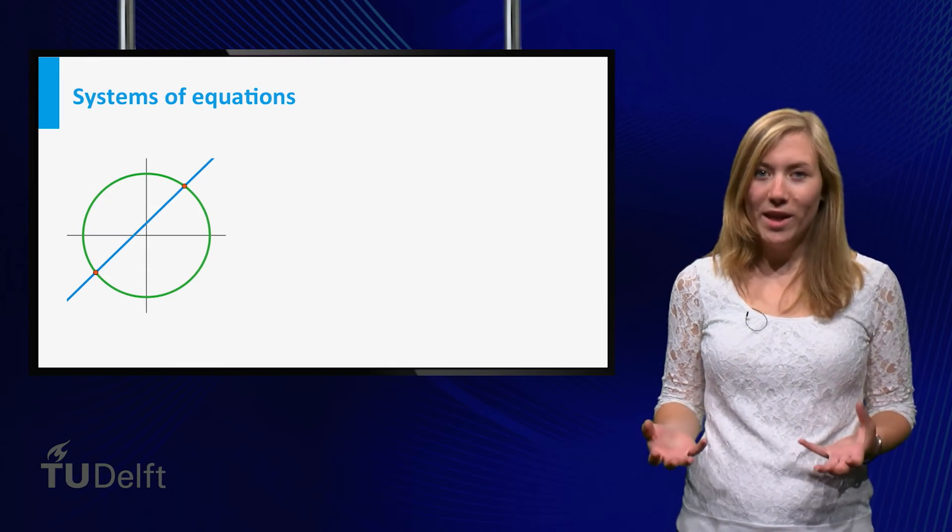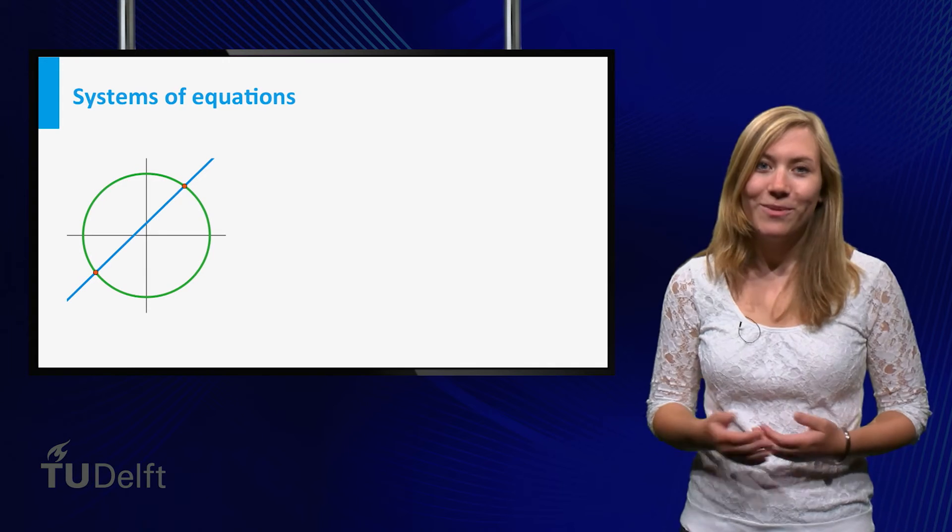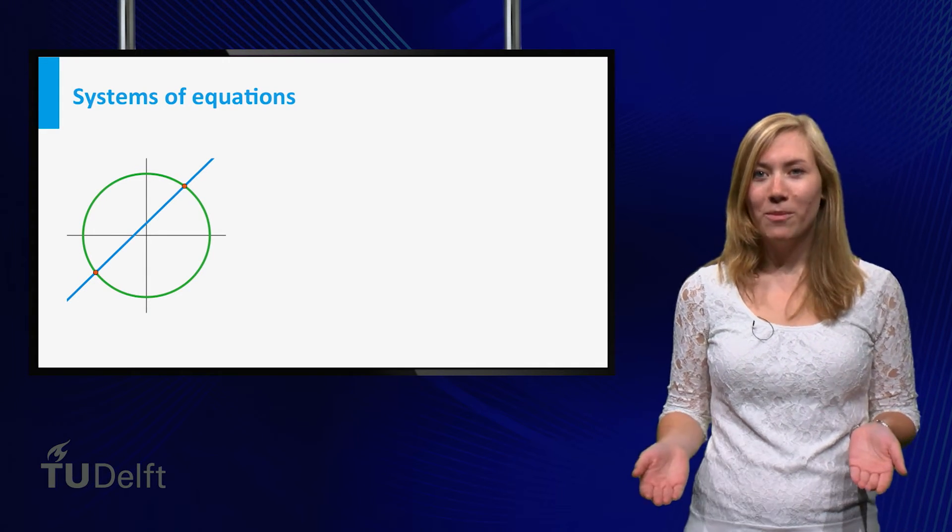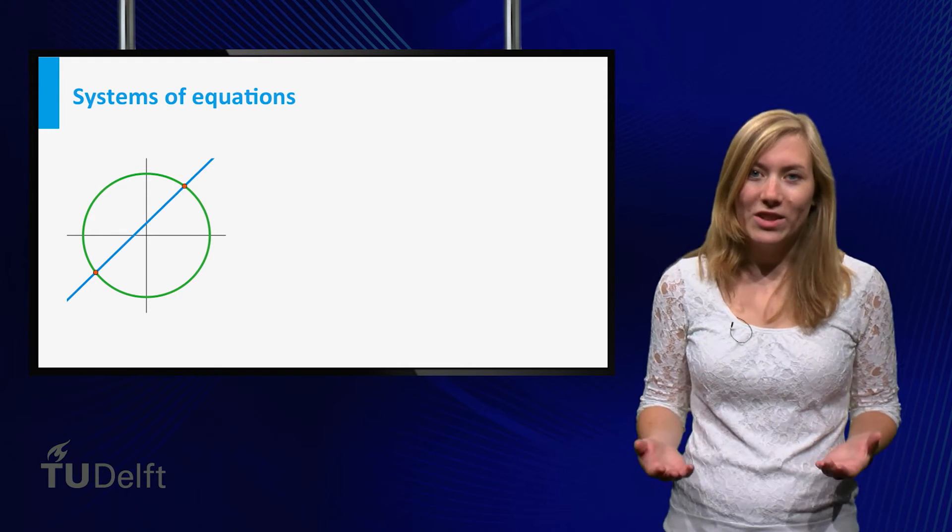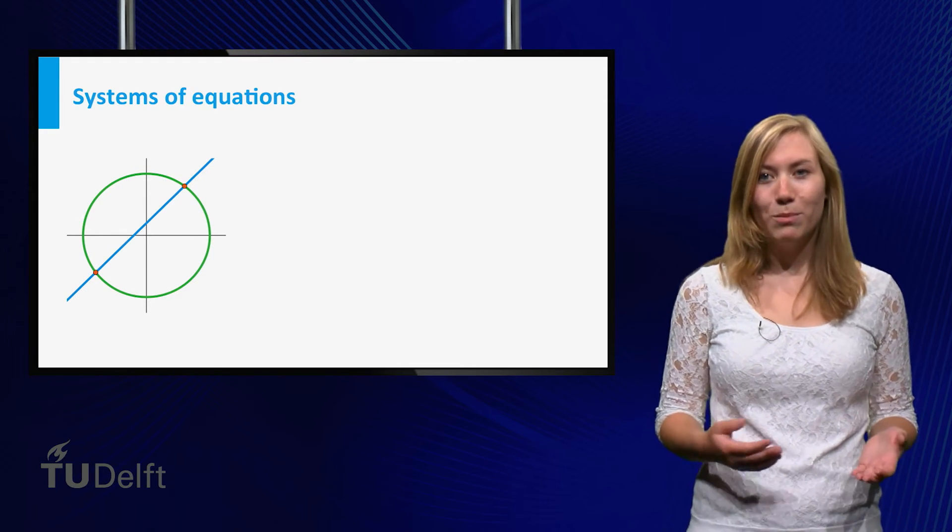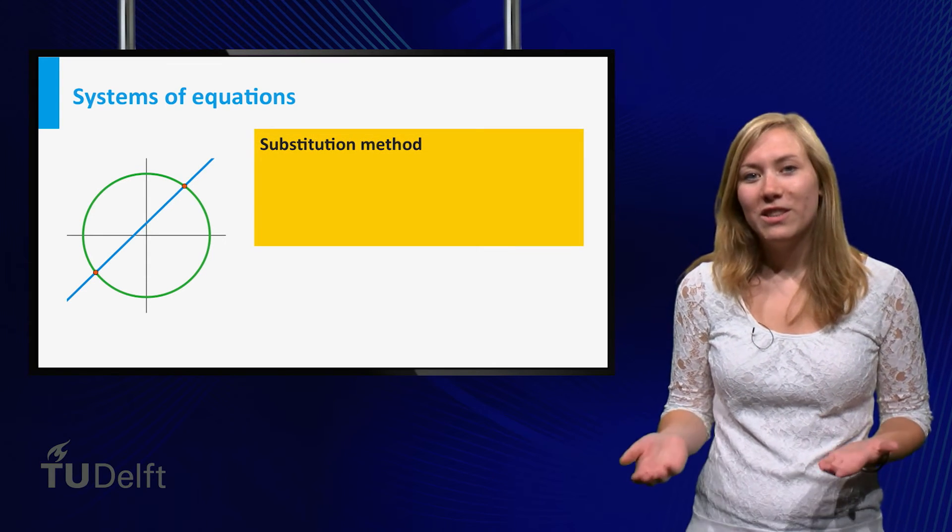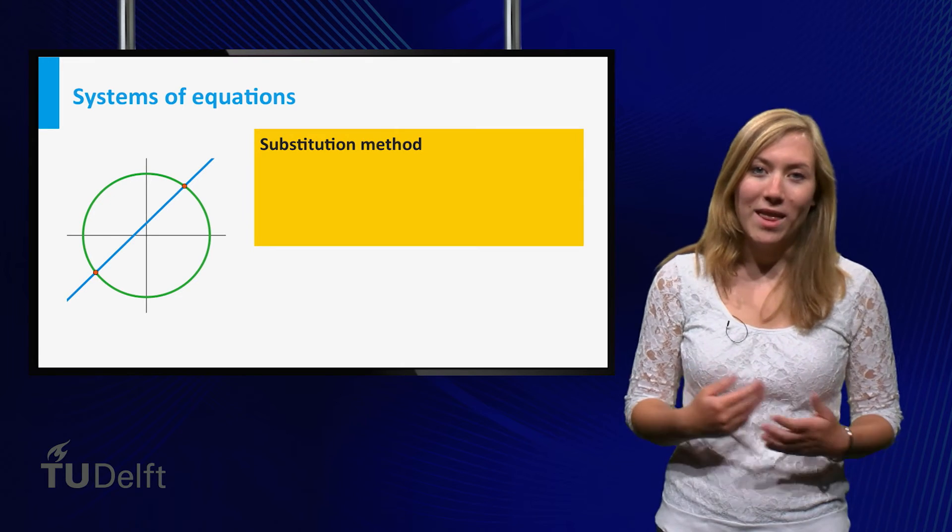The last topic of this week was systems of equations. That is, we want to solve a set of two equations in two variables. This is useful, for instance, if you want to find the intersection points of a line and a circle. To solve such systems of equations, you can use the substitution method.